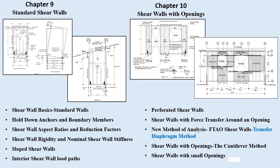Chapter nine includes shear wall basics, standard walls, hold down anchors and boundary members, shear wall aspect ratios and reduction factors, shear wall rigidity and nominal shear wall stiffness, slope shear walls, and interior shear wall load pass. Chapter ten has been significantly revised and extended to include a new method of force transfer around opening analysis, which allows multiple openings of different depths and the addition of dead loads. It also addresses shear walls with small openings, including perforated shear walls, shear walls with force transfer around openings, shear walls with openings, and the cantilever method.